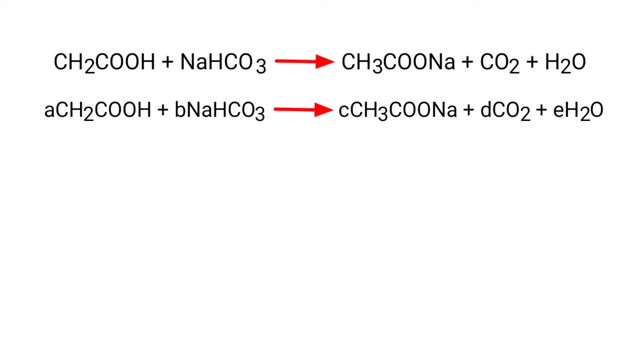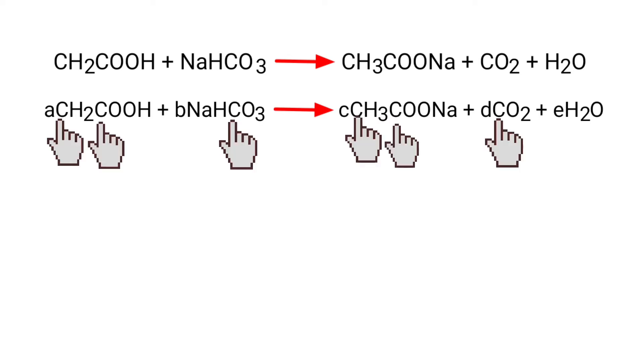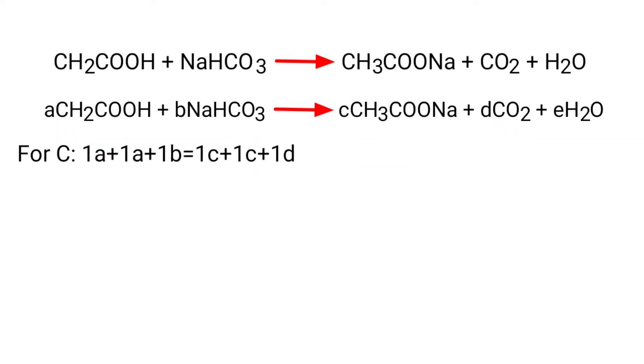For Carbon: 1A plus 1A plus 1B equals 1C plus 1C plus 1D. So 2A plus B equals 2C plus D.